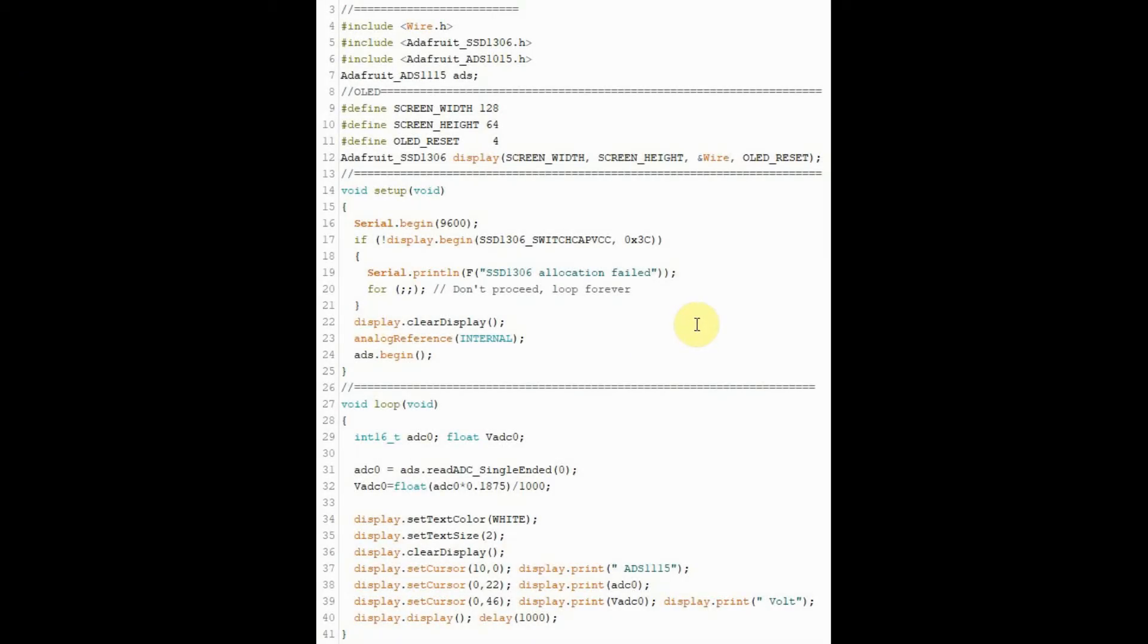This is the C++ code used in this project. In the loop function, the first thing we do is read the 16-bit value from the ADC converter and store it into a variable. Then we convert this 16-bit value into voltage and display the values on the OLED display.